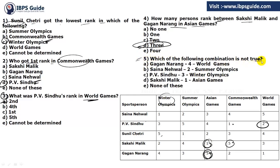Last question: Which of the following combinations is not true? Let's check option A — Gagan Narang rank 4 in World Games. But from our grid, Gagan Narang got rank 4 in Winter Olympics, not World Games. So this combination is not true and that is our answer. We don't need to check the others, but Sanya Nehwal rank 2 in Summer Olympics is correct. So option A is not true.